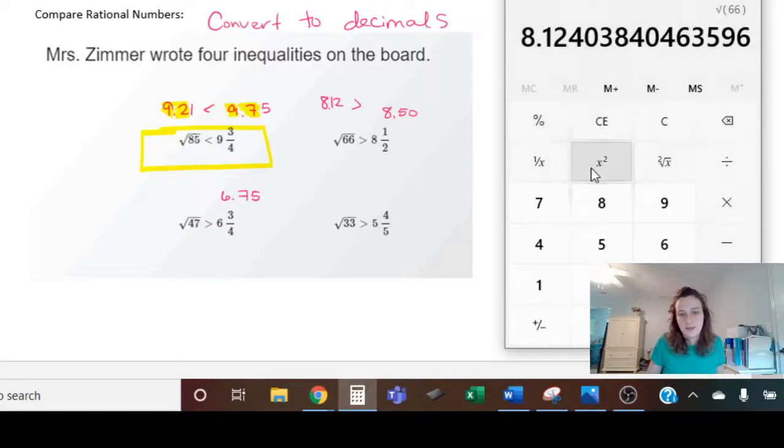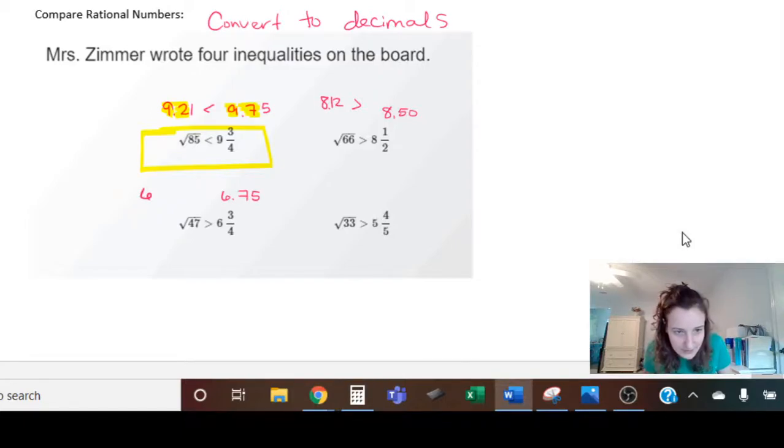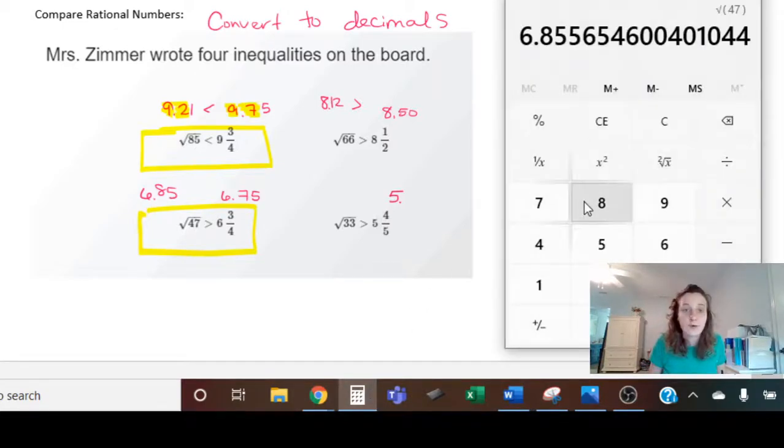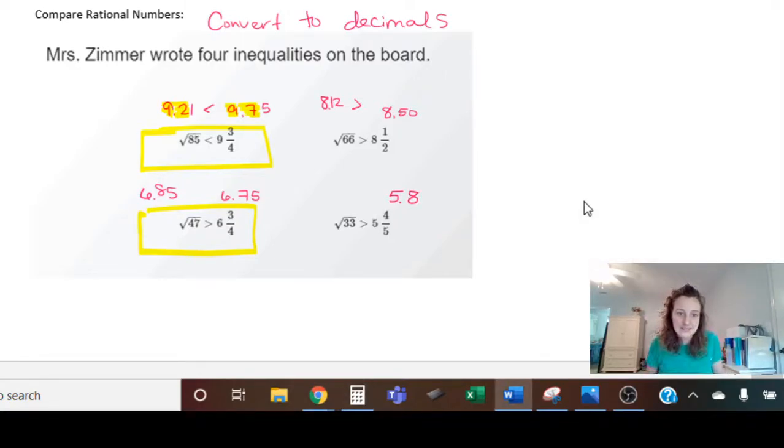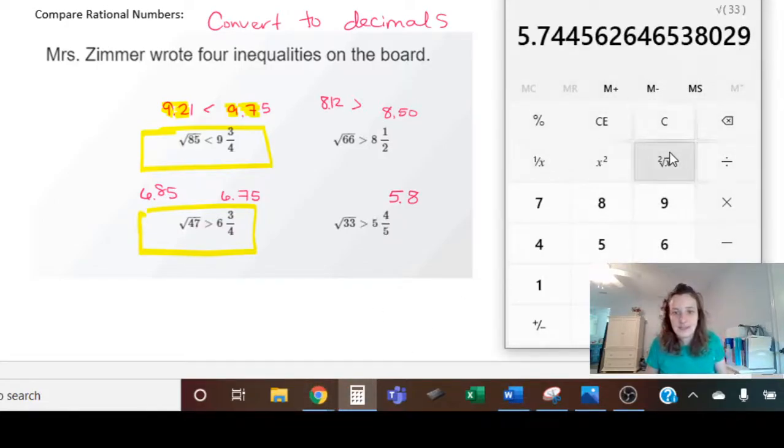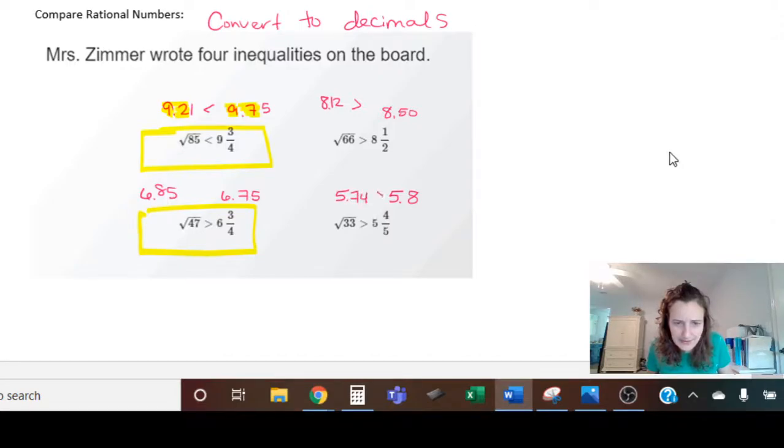And just to be thorough, I'm going to go ahead and do the last one. 5 and 4 fifths - if you don't know them off the top of your head, remember that you're going to divide. That's how you will come up with your decimals here. The whole number stays the same - 5 is the whole number. And to convert 4 fifths to a decimal, you divide 4 divided by 5, enter - point 8. So this is 5 and 8 tenths. And now the square root of 33 is 5.74. So is 5.74 greater than 5 and 8 tenths? No it's not. So these two are not correct, and the two on the left are.